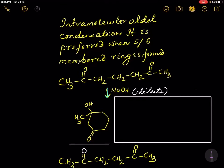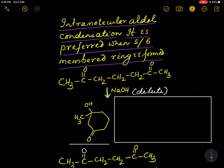Hello, welcome back to my channel. In this video we will discuss intramolecular aldol condensation. It is preferred when a 5 or 6-membered ring is formed. You see this is a diketone — this diketone on treatment with dilute NH₃ gives a compound as shown.